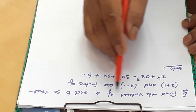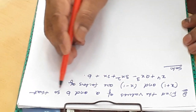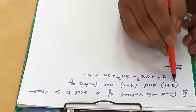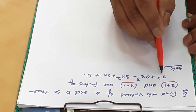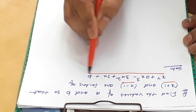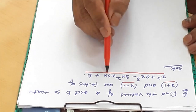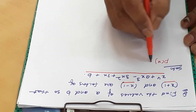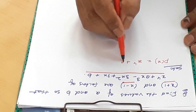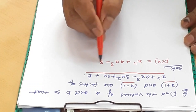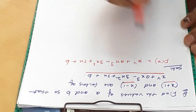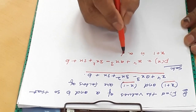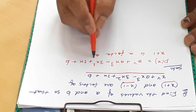Here the question is: find the values of a and b so that x plus 1 and x minus 1 are factors of the polynomial x⁴ plus ax³ minus 3x² plus 2x plus b. The polynomial P(x) is x⁴ plus ax³ minus 3x² plus 2x plus b. It is given that x plus 1 is a factor of P(x).